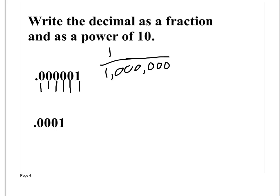Then I need to write that as a power of 10. I count how many zeros I have — 6. So I raise 10 to the 6th power. I wrote it as a fraction, and I wrote it as a power of 10. Now if it says use a negative exponent, I would change this to 1 times 10 to the negative 6, which is just like scientific notation, which you've done in science.